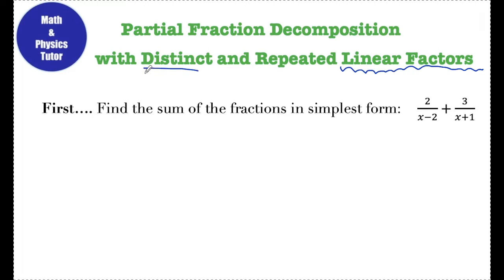Distinct linear factors means two or three or four — however many — different linear factors. So maybe x minus 2 and x plus 1, or x plus 3 and x minus 5. Repeated linear factors are when you have a linear factor that occurs two, three, or four times depending on the exponent — maybe x plus 1 squared, or x squared, or x minus 2 squared. That's the vocab you need going into this topic.